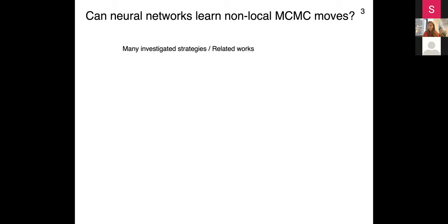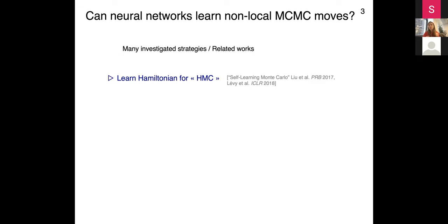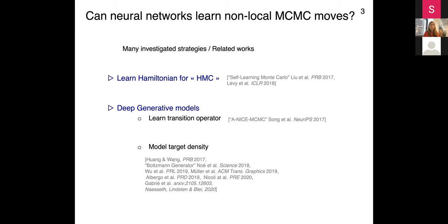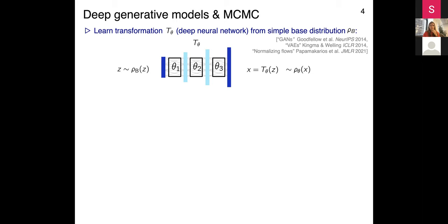There has been a lot of work over the past two to three years looking at this problem. Hamiltonian Monte Carlo (HMC) is one very popular method that is local but not too local - some authors propose learning a Hamiltonian for HMC to further decorrelate the Markov chains. Other authors have investigated using directly deep generative models to learn the transition operator or to model the target density directly. This is going to be the focus of this talk - we are placing ourselves among those works.